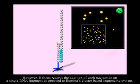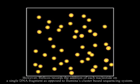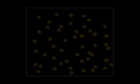However, Helicos records the addition of each nucleotide on a single DNA fragment, as opposed to Illumina's cluster-based sequencing system. This allows for billions of unique fragments to be independently sequenced at the same time.